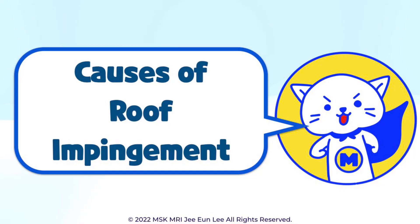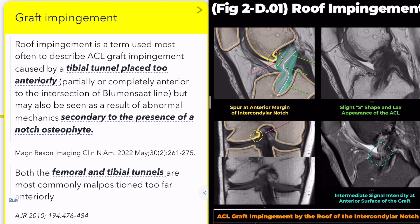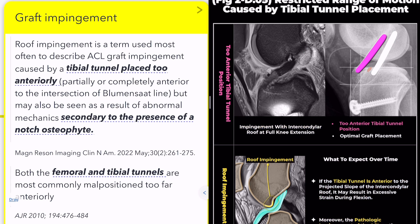The primary cause of roof impingement is anterior positioning of the tibial tunnel. Ideally, the tunnel should be located behind Blumensaat's line. The white area shows optimal graft placement, while the pink indicates a tibial tunnel position too far anterior. If it's partially or entirely in front of this line, impingement is inevitable, leading to graft pinching.